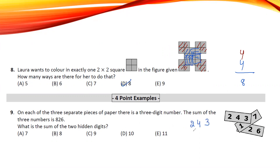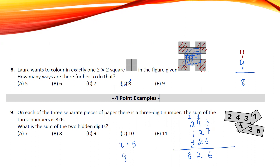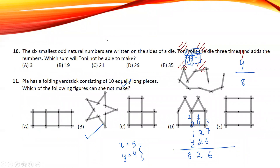The visible numbers are 243 and the sum is given as 826. The hidden digits are X and Y. Adding: 7+6=13, carry 1; 4+5+1=10... so 12 minus 7 gives X=5. With carry over: 2+3+4=9, and 8 minus 4 gives Y=4. The sum of the hidden digits is 9.